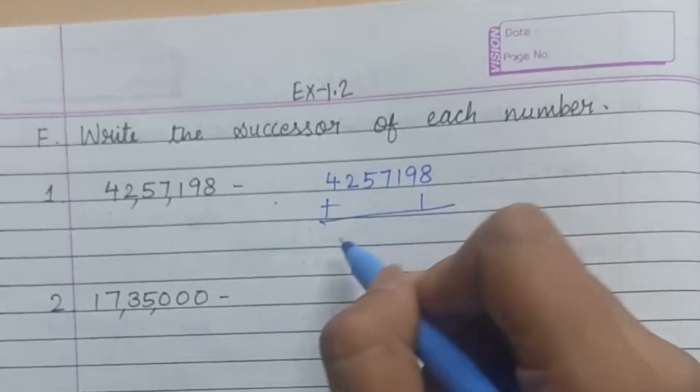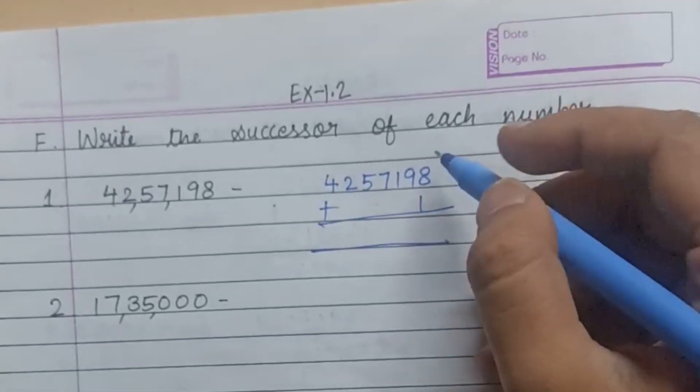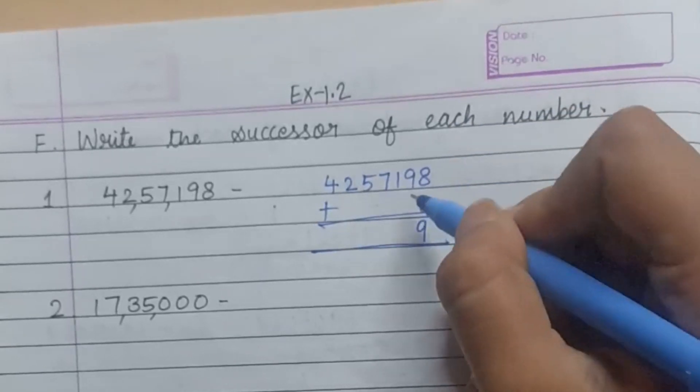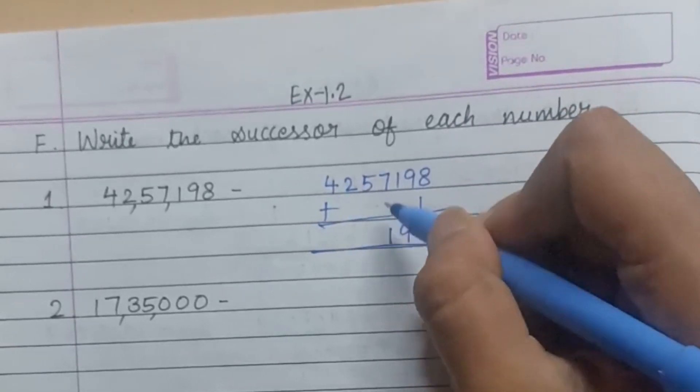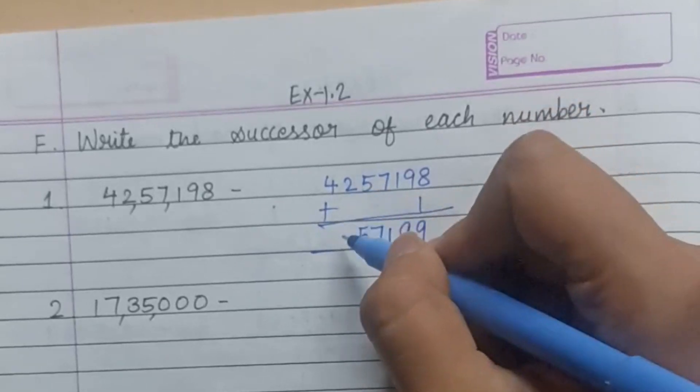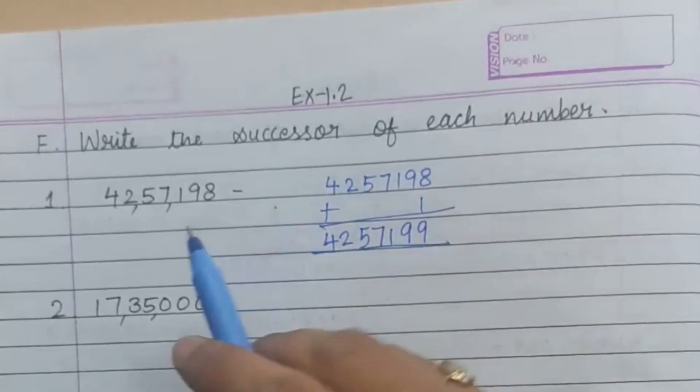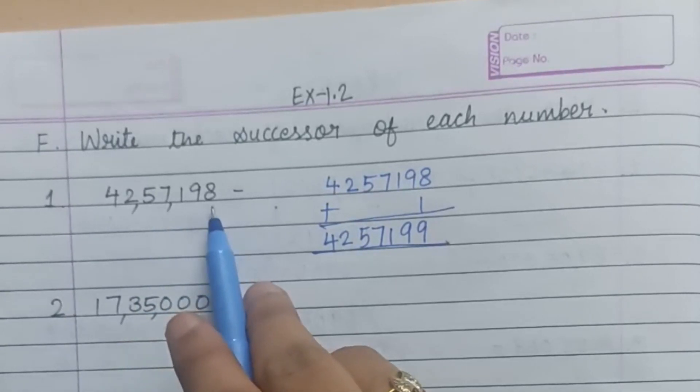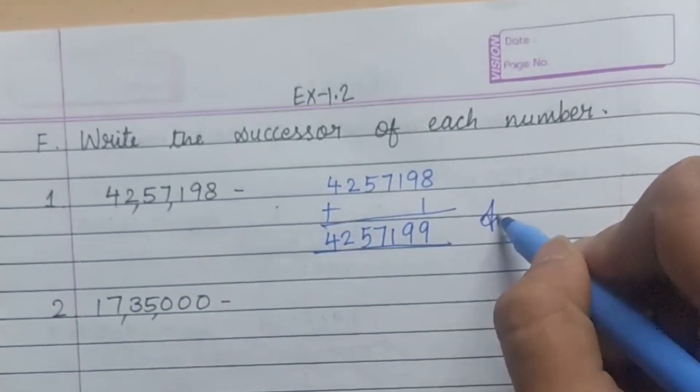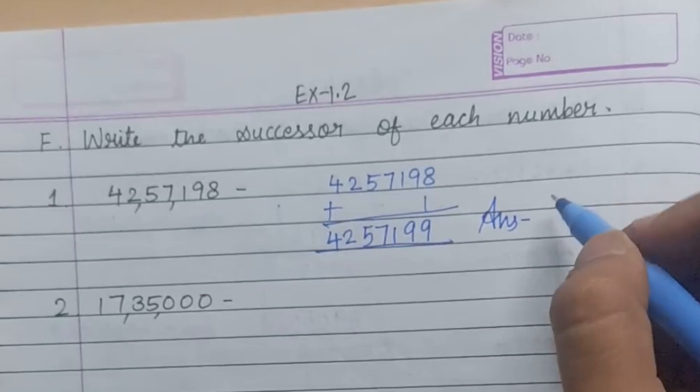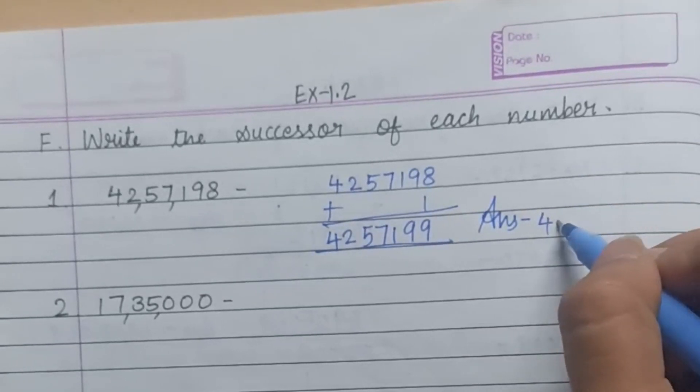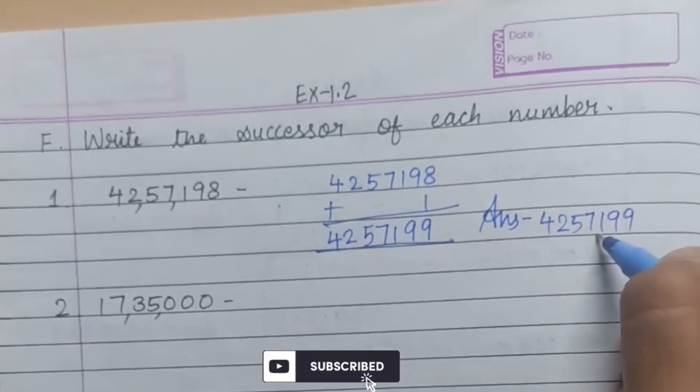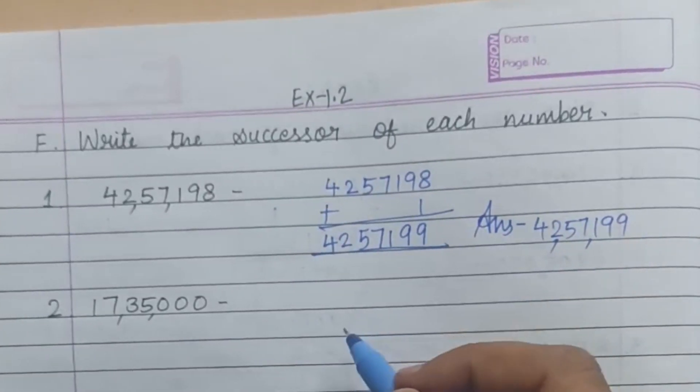Add 1. Write 1 in the ones place. Now add the numbers: 8 plus 1 is 9, then 9, 1, 7, 5, 2, 4. So the successor of 42,57,198 is 42,57,199.